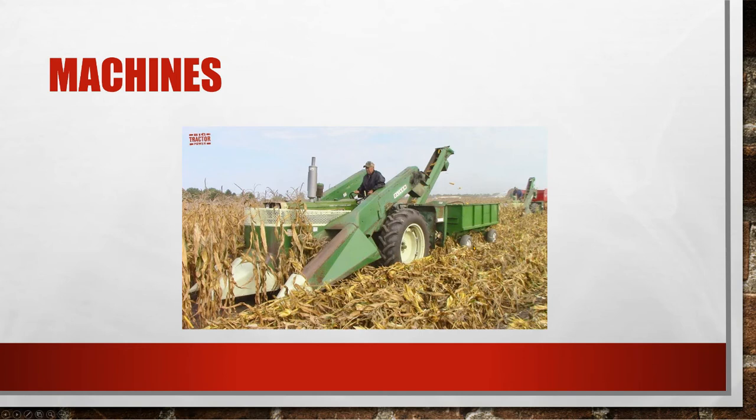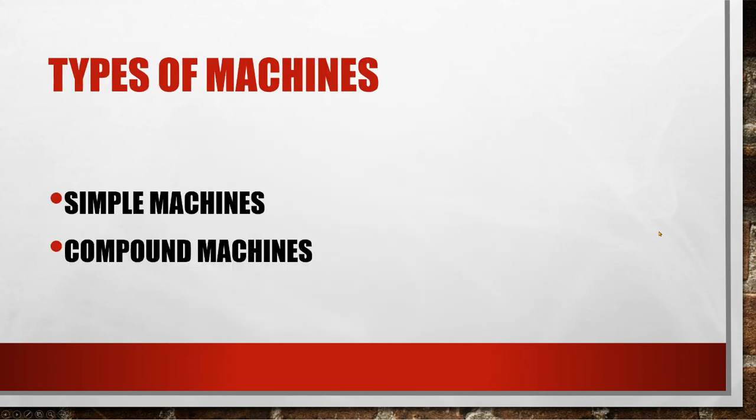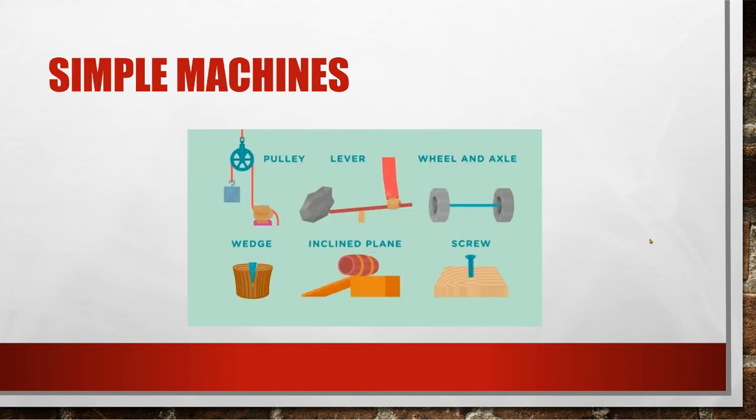Machines make doing work easier. Imagine picking corn, going out and picking corn like the Amish do. It's a rough job. They use machines too, but not quite as advanced as we would use. There are types of machines: simple machines and compound machines. Here's the six simple machines: a pulley, a lever, a wheel and axle, a wedge, an incline plane, and a screw.